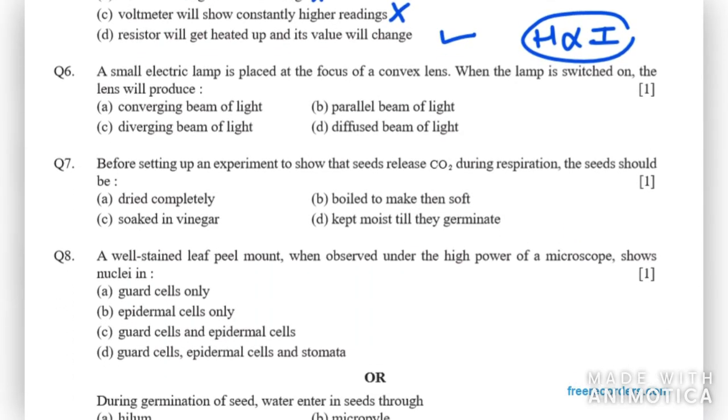Moving on to question number 6. It says a small electric lamp is placed at the focus of a convex lens. When the lamp is switched on, the lens will produce: converging beam of light, parallel beam of light, diverging beam of light, or diffused beam of light? We have a convex lens here. Convex lens forms converging beam of light. But in this case we have a lamp which is switched on and all the rays are going towards it. As a result, the lens will form parallel beam of light. From the converging lens we will have parallel beam of light produced.